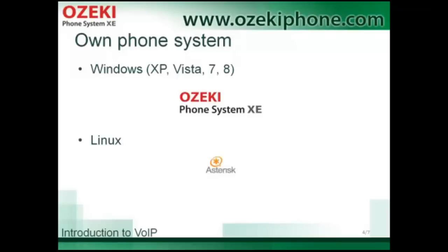Next to Ozeki Phone System XC you can find other phone systems — for example, for Linux you can use Asterisk. But it isn't easy to use with the CLI mode, so the advanced and transparent Ozeki Phone System XC can be a better choice, and you can connect it to other phone systems.